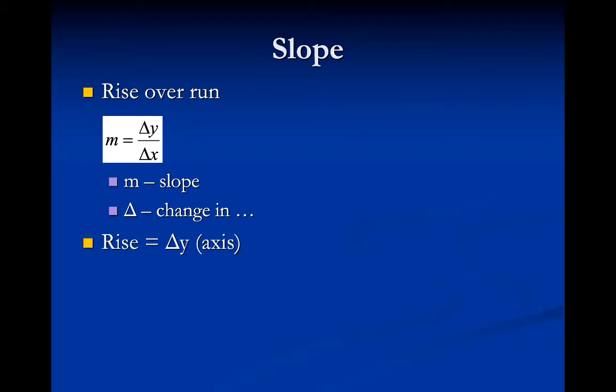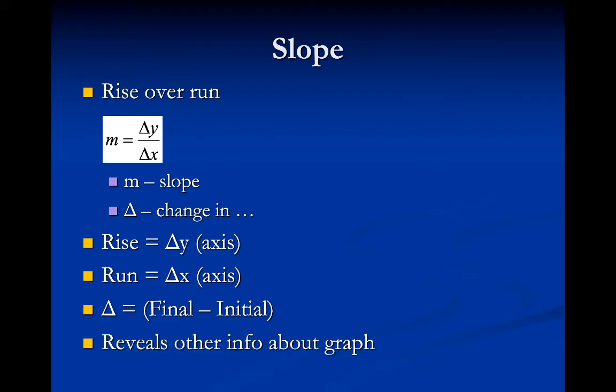So the rise is whatever change occurs along the y-axis, and the run is whatever change occurs along the x-axis, hence rise over run. Another way to describe delta, which is really done a lot in physics, is what I call final minus initial. Whenever you see a delta, like delta y, you find your final y value and subtract your initial y value. This will be important in other physics things we do throughout the year. Slope often reveals hidden information about the graph.